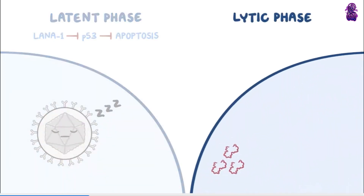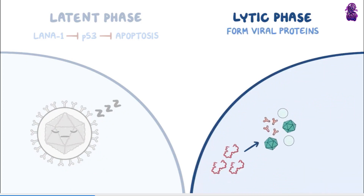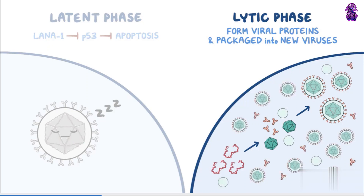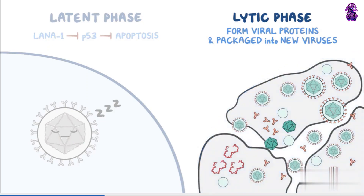In the lytic phase, the virus starts to replicate, so its DNA gets transcribed and translated by cellular enzymes in order to form viral proteins, which are packaged into new viruses. When the virus enters into the lytic phase, thousands of virus particles can be made from a single cell, which can destroy the cell and subsequently infect neighboring cells.